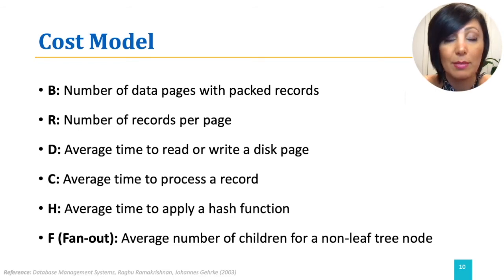At this point, please pay attention that some of these numbers are orders of magnitude larger than the others. For example, D, the average time to read or write a disk page, is orders of magnitude higher than C and H. Therefore, you will see in some cases how we will ignore the comparably smaller parts in an equation for simplifying our estimation.